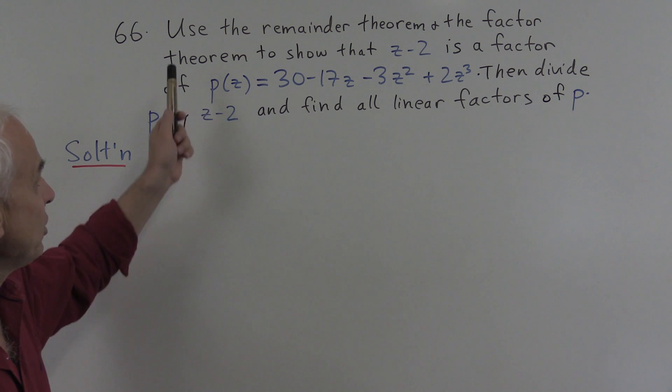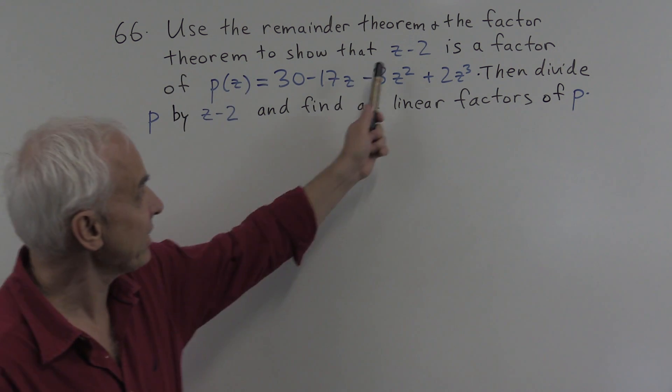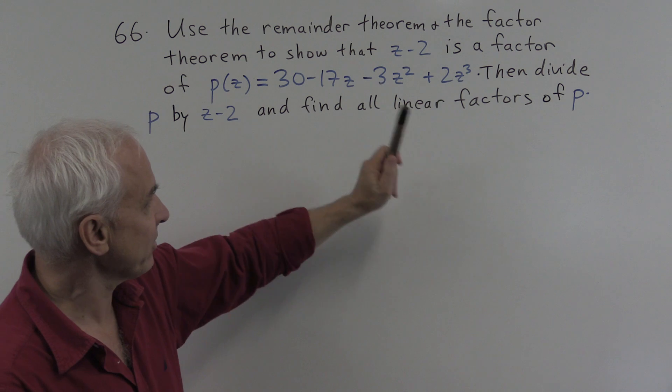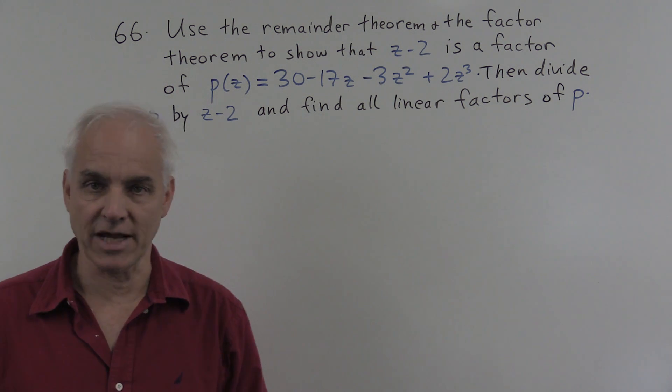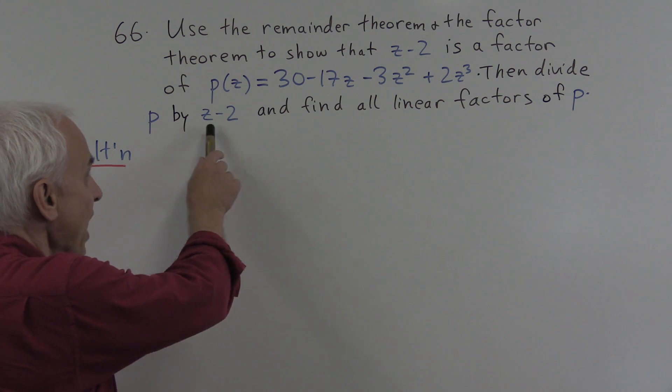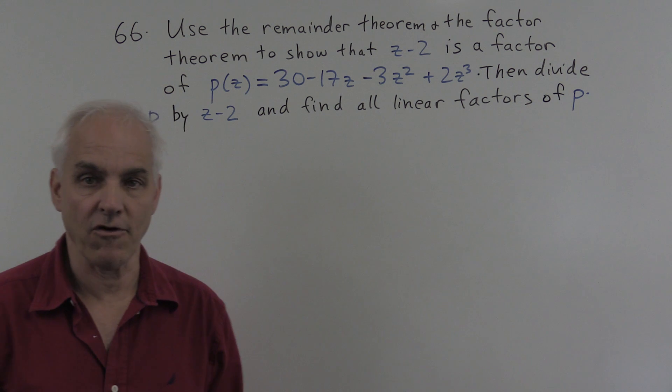So the problem is: use the remainder theorem and the factor theorem to show that z minus 2 is a factor of the polynomial p(z) = 30 - 17z - 3z² + 2z³. Then divide p by z - 2 and find all linear factors of p.